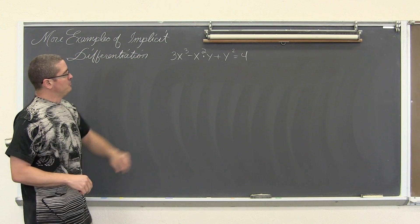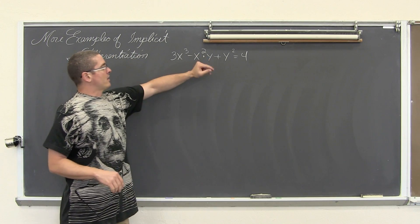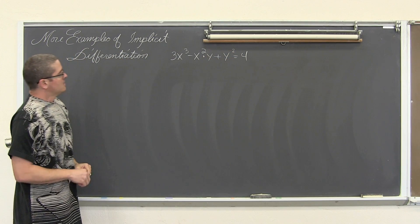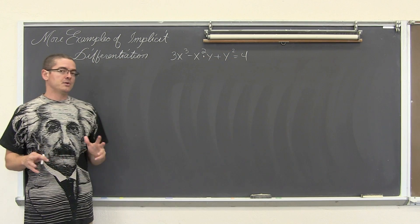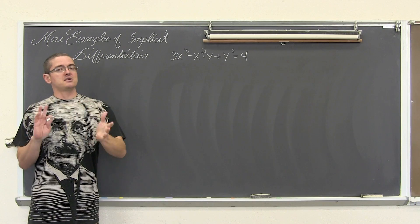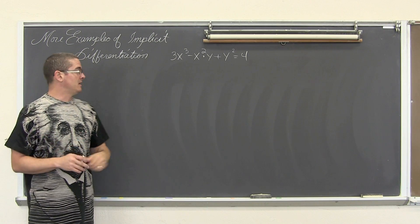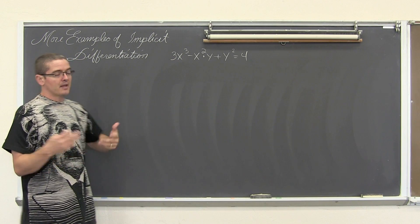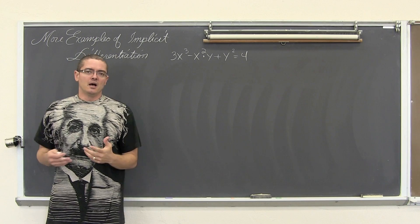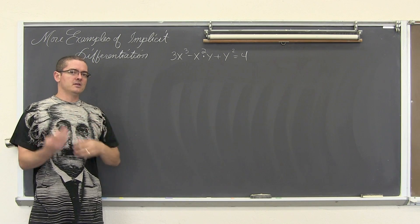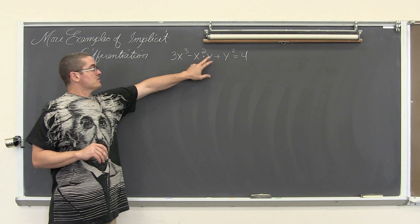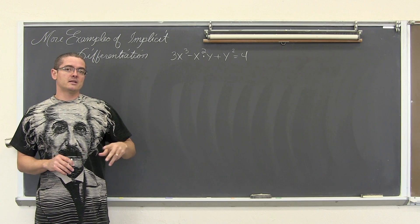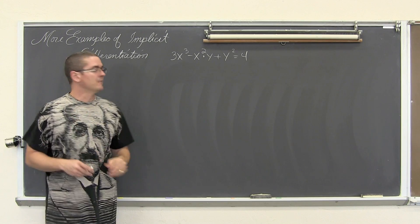We have 3x cubed minus x squared times y plus y squared equals four. We are going to take the derivative of both sides of this equation with respect to x. Whenever there is an x variable, finding the derivative will seem normal, and everywhere there is a y we have to do the chain rule.